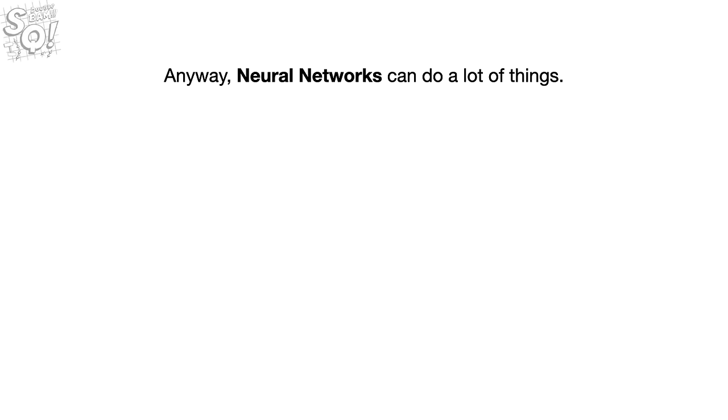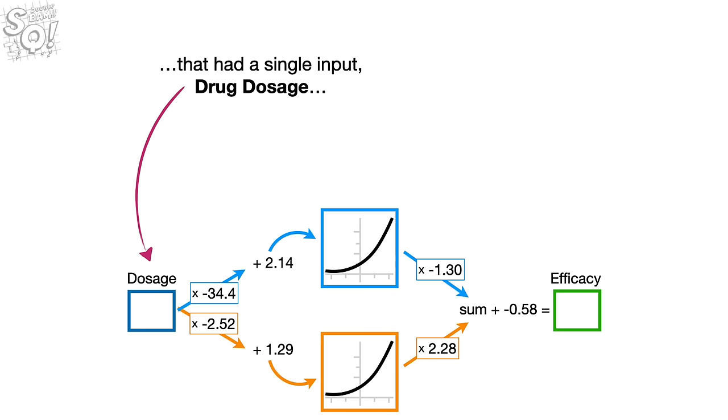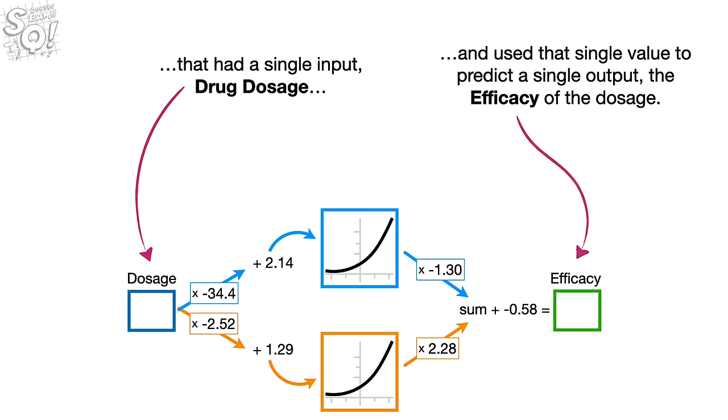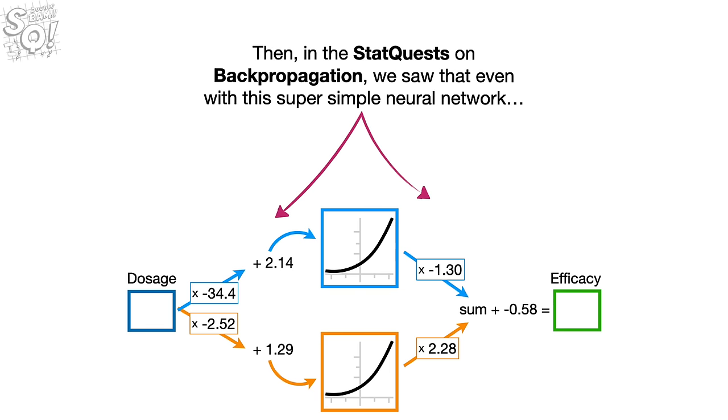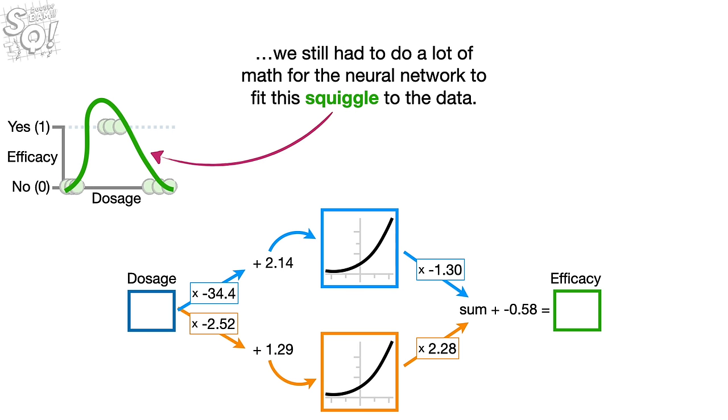Anyway, neural networks can do a lot of things. For example, in the StatQuest Neural Networks Part 1, inside the black box, we had a simple neural network that had a single input, drug dosage, and used that single value to predict a single output, the efficacy of the dosage. Then, in the StatQuest on backpropagation, we saw that even with this super-simple neural network, and this super-simple training data with only three data points, we still had to do a lot of math for the neural network to fit this squiggle to the data. Ugh. Math.